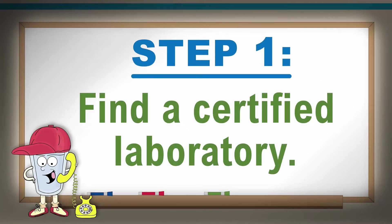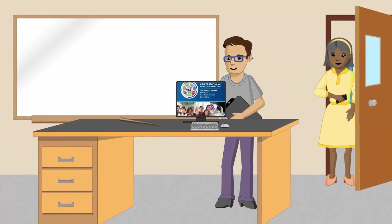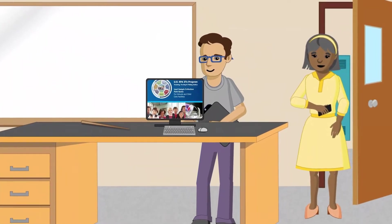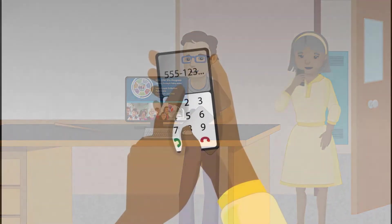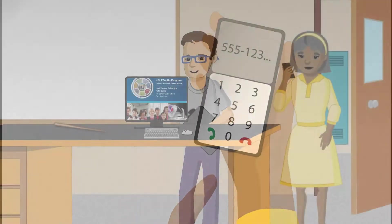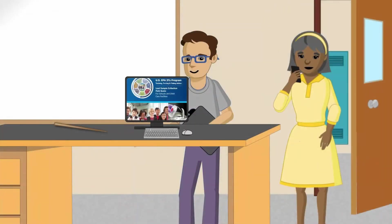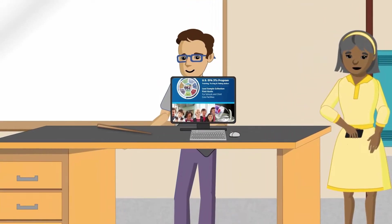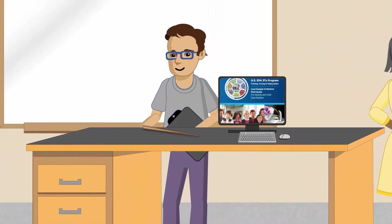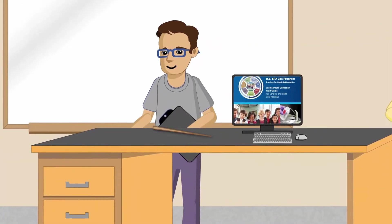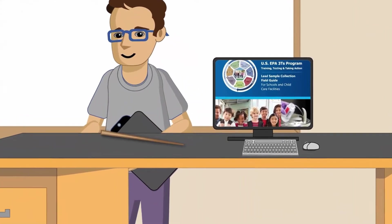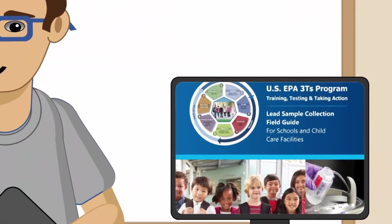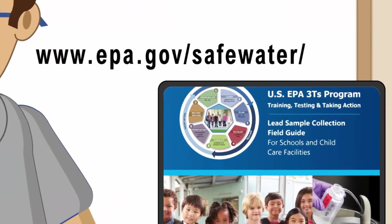Step 1: Find a certified laboratory. If you are served by a water utility, they may test for lead in your drinking water upon request. Otherwise, contact a state-certified lab. The lab will either collect your drinking water samples for you or send you the materials to collect them yourself and ship them back. If you need help finding a certified lab, the EPA 3Ts Lead Sampling Field Guide can provide helpful direction and is located on the EPA 3Ts website.